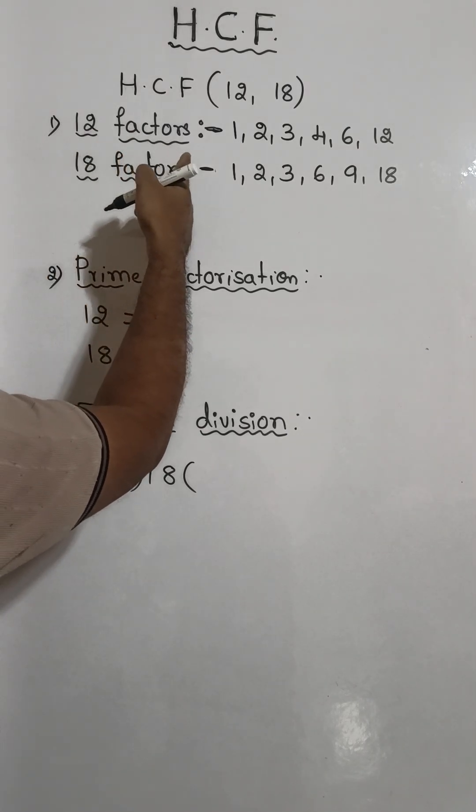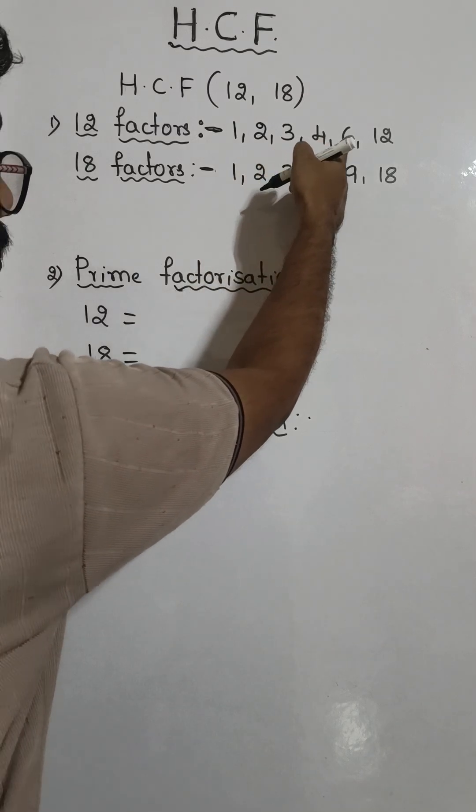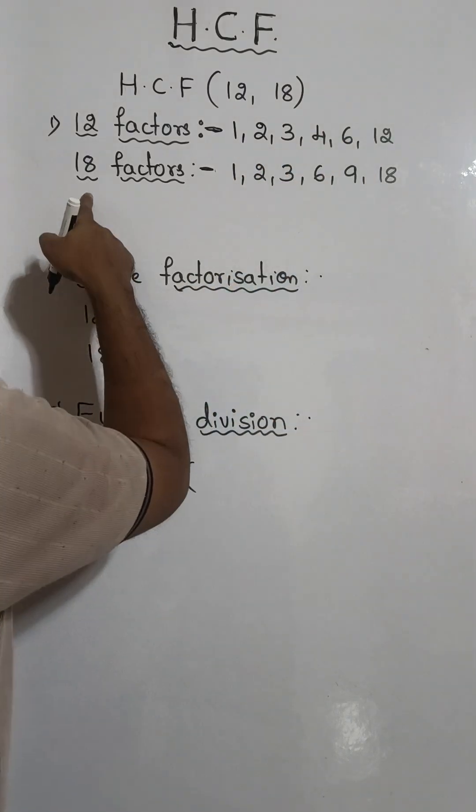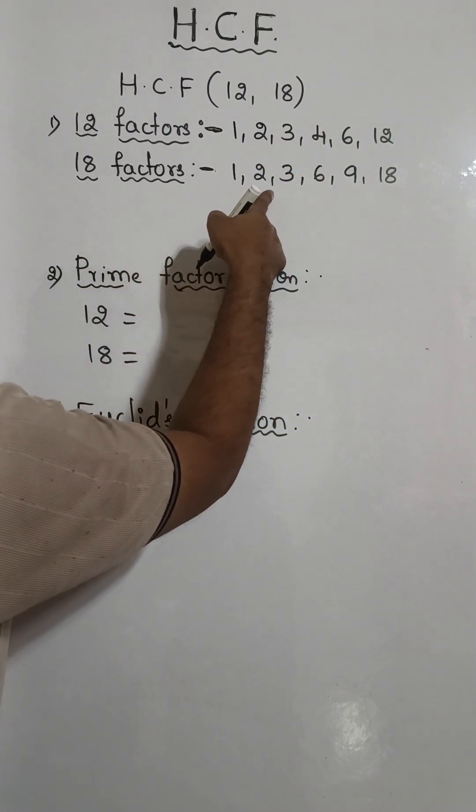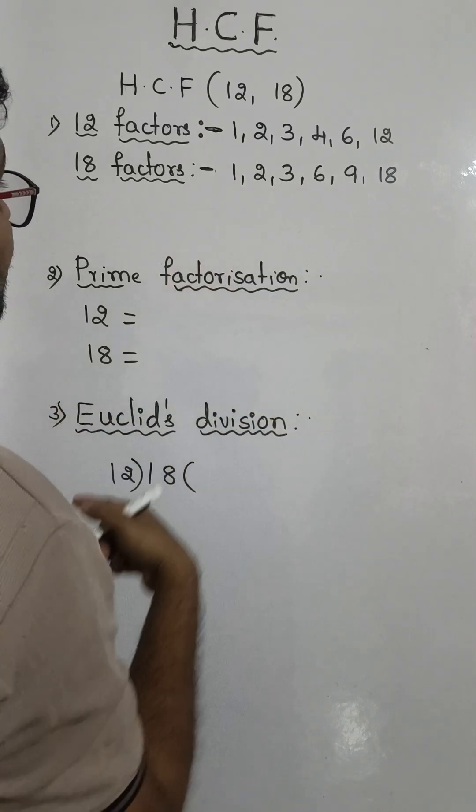The factors of 12 are 1, 2, 3, 4, 6, and 12. And factors of 18 are 1, 2, 3, 6, 9, and 18.